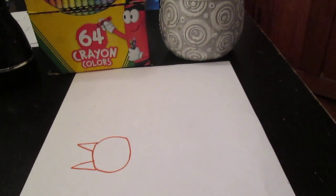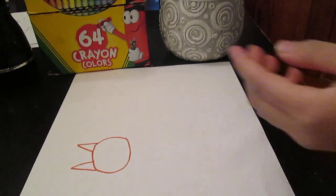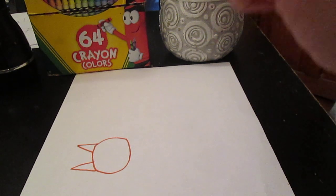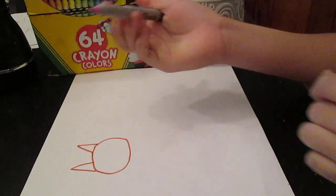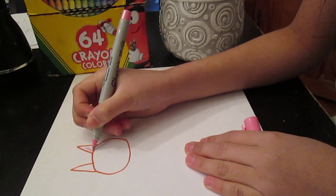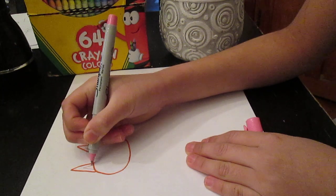Now you're going to use a pink skinny Sharpie. It's like a pen, but mostly like a Sharpie. I'm going to draw the inside. You're going to color in the inside of the cat.